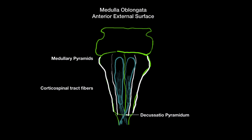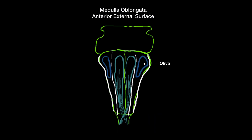Decussatio means crossing of fibers — so that is the medullary pyramids. If you go even more laterally, between the sulcus anterolateralis and sulcus posterolateralis, you're going to have what is called the oliva. The oliva is going to contain some tracts — the olivary tracts. That covers the structures on the anterior external surface.